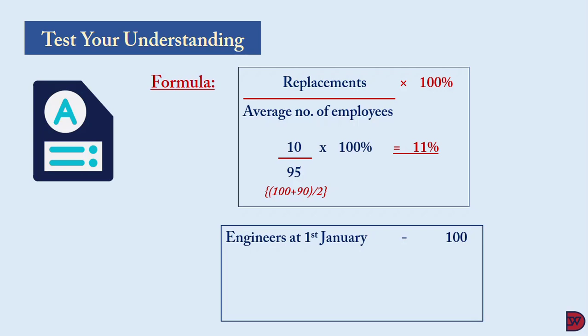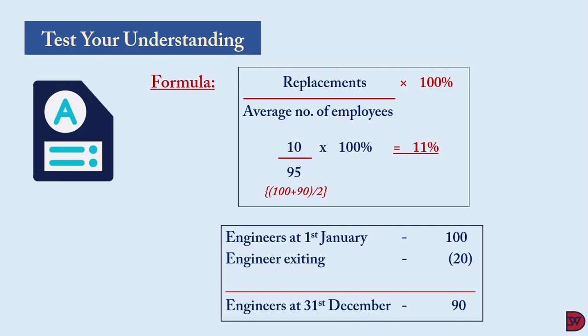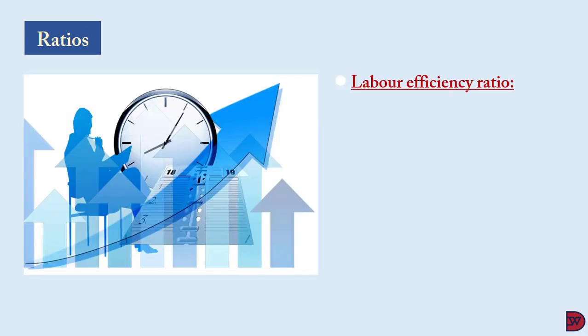For the workings: the average number of employees is 100 at the beginning plus 90 at the end, divided by 2, giving 95. To calculate replacements — we start with 100 engineers at the beginning of the year, 20 left, so ideally 80 should remain. But the question states 90 were left at year end, meaning they replaced 10 of the 20 that had left.